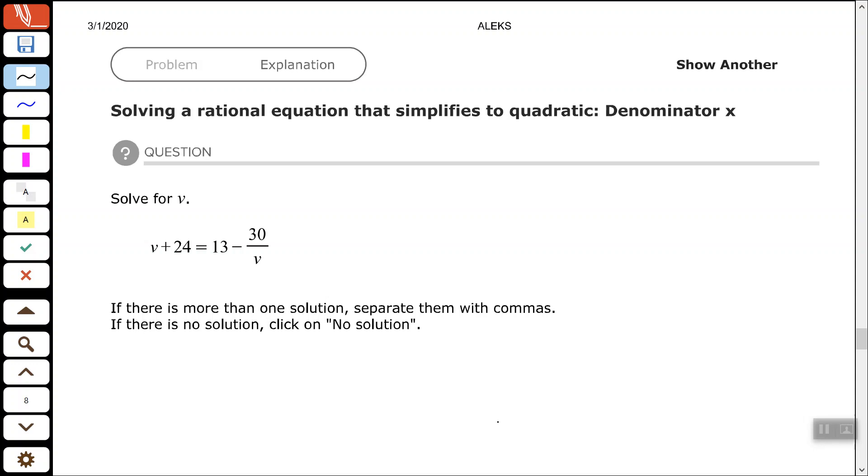Which is a variable. So we need to identify the excluded value by setting that expression equal to zero. So my excluded value for this is zero. So my solution can be anything else except zero.